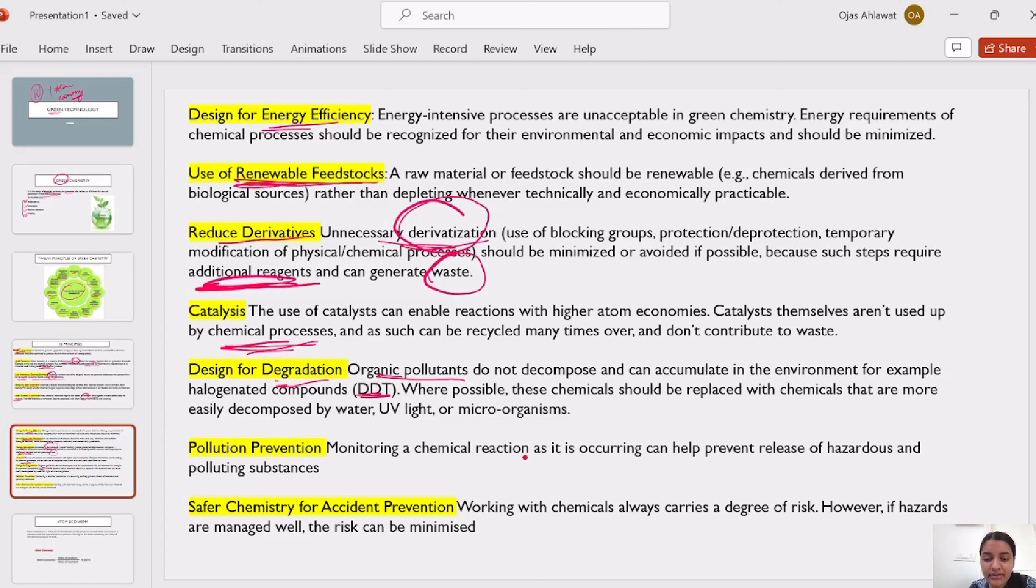Pollution prevention. That means, you have to monitor chemical reactions, to what extent hazardous substances are produced, and to what extent they add in your pollution. Now, safer chemistry for accident prevention. That means, working with chemicals always carries a degree of risk. However, if hazards are managed well, risk can be minimized. That means, chemistry can be safer, so that accident prevention can be possible. We always know, that whenever there is a use of chemicals, this means, that there is risk, because chemicals are never safe. But, if you manage it, then risk can be minimized.